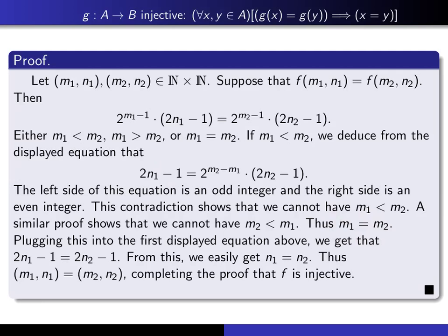The moment m1 equals m2, we can cancel that factor from both sides, giving 2n1-1 equals 2n2-1. Adding 1 to both sides and dividing by 2 gives n1 equals n2. So we have m1 equals m2 and n1 equals n2, and therefore these ordered pairs are equal. That completes the proof that f is injective.